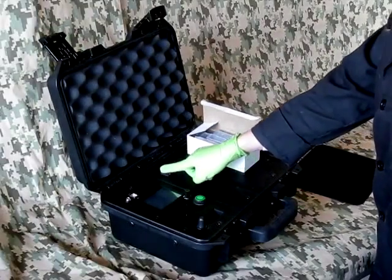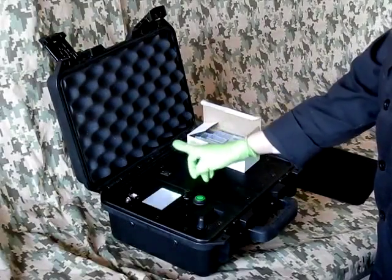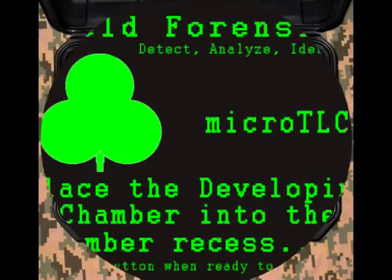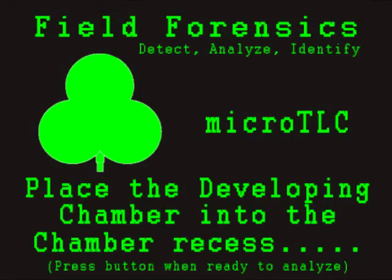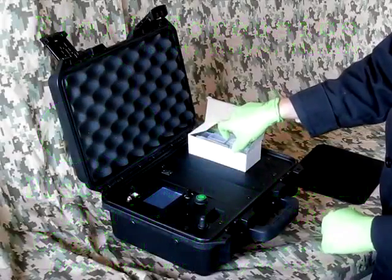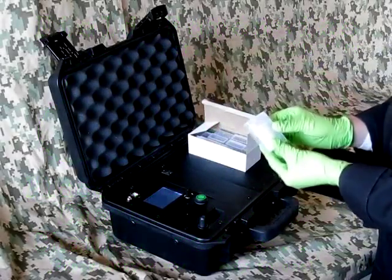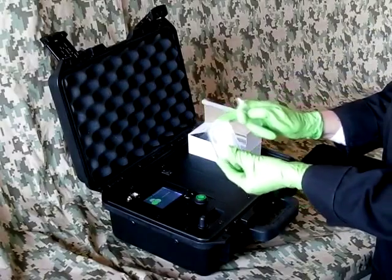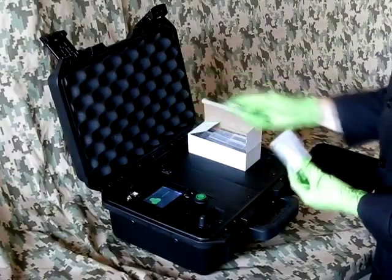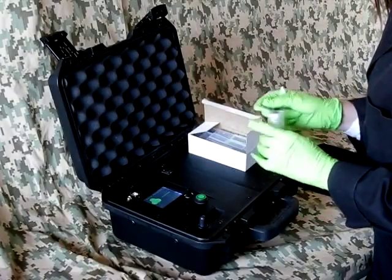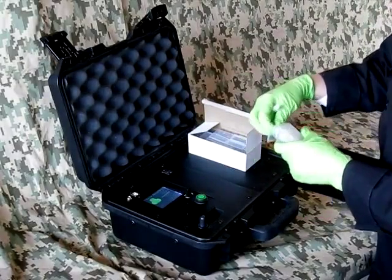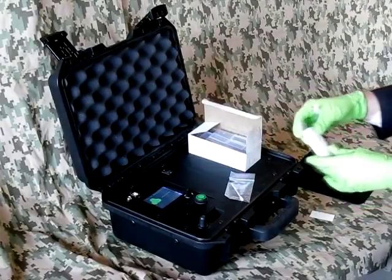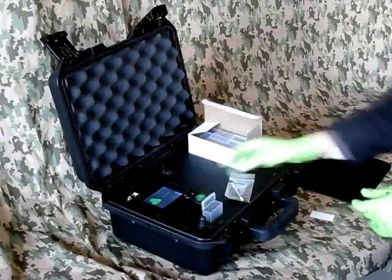For micro TLC testing for explosives, turn on the micro TLC. The screen will give you step-by-step instructions. First, remove the consumables from the box — the developing chamber and the mobile phase. The consumables come inside the developing chamber. Place the developing chamber in the slot and press the button.